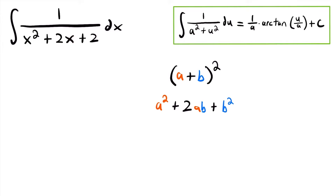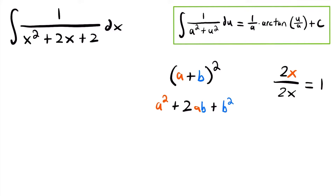Taking the middle term 2x, we want to solve for b by dividing out the 2 and dividing out a, which is x. So we have 2x divided by 2x, which gives us 1. That is our value of b. Squaring it, 1 squared is just 1. That is our value of b².